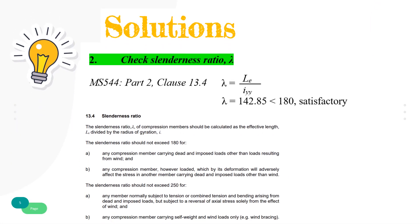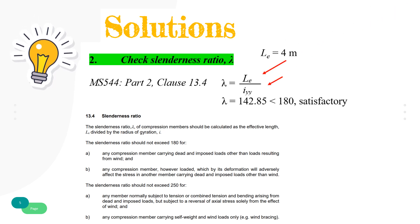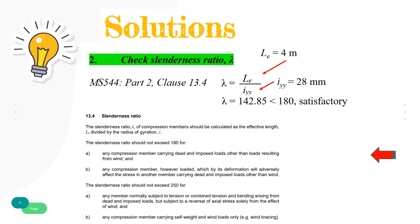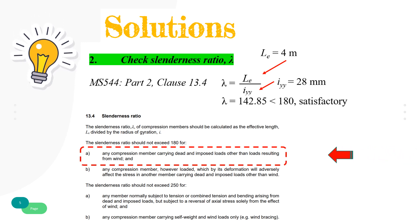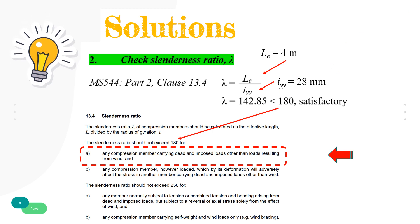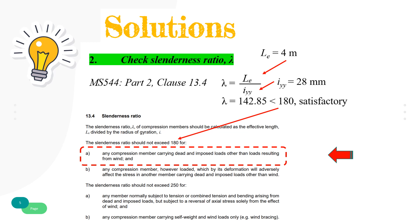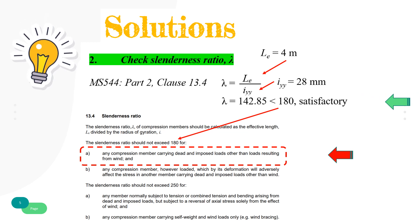The slenderness ratio of compression members should be calculated as the effective length divided by the radius of gyration. Refer to Clause 13.4: the slenderness ratio should not exceed 180 for compression members carrying dead and imposed loads other than loads resulting from wind. The check is satisfactory since the slenderness ratio is less than the limit of 180.